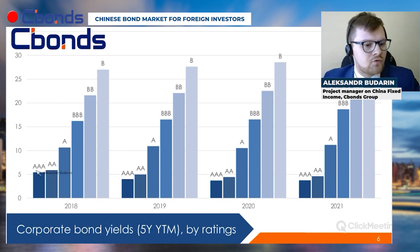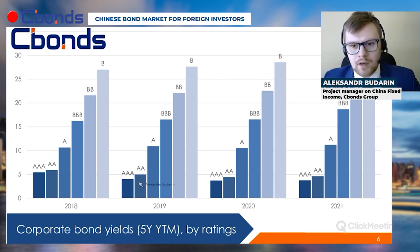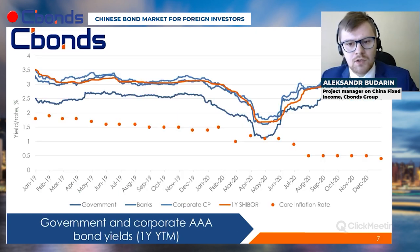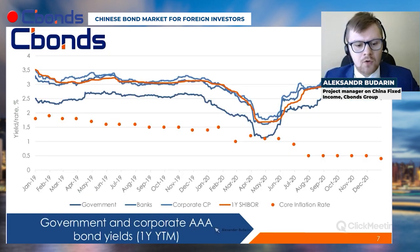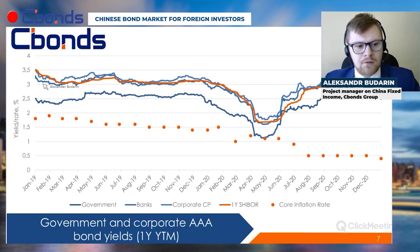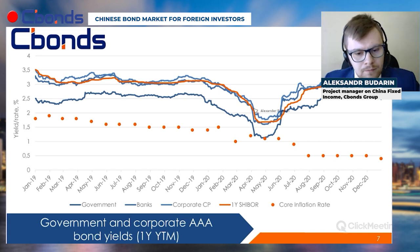The triple A and double A yields are quite close and worth mentioning. As for the two-year dynamics of triple A corporate bonds, they are quite close to government bond dynamics, fluctuating at about 3 percent, with a sharp drop in spring of 2020.